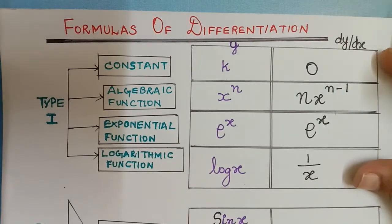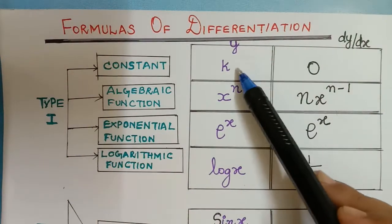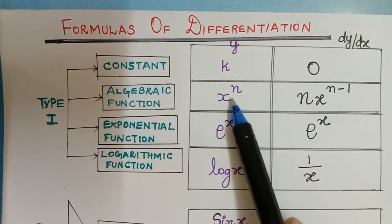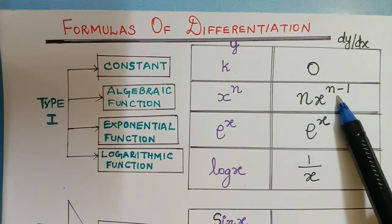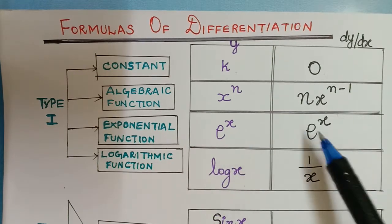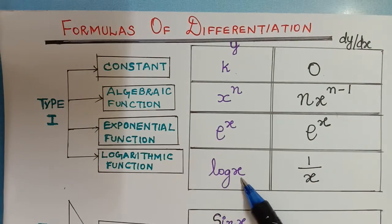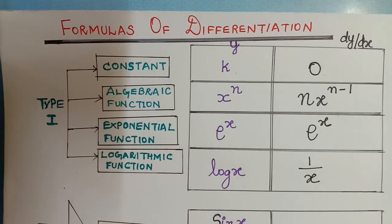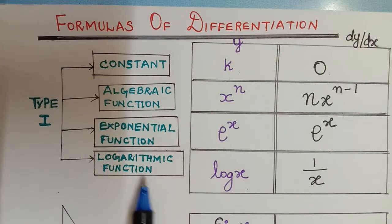To summarize, we categorize type 1 into four formulas: the constant k when differentiated gives 0; the algebraic function x^n when differentiated gives n·x^(n−1); the exponential function e^x when differentiated gives e^x; and log x when differentiated gives 1/x. I hope the formulas of type 1 are very clear to you.